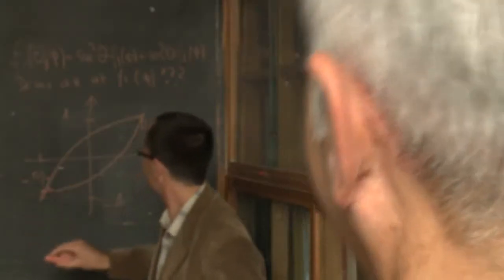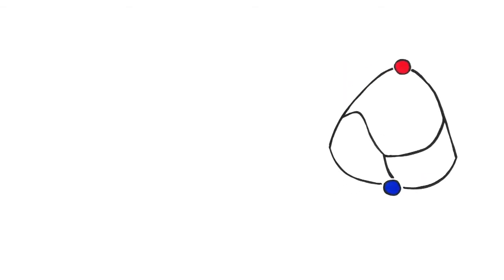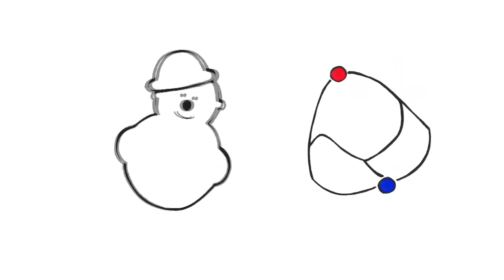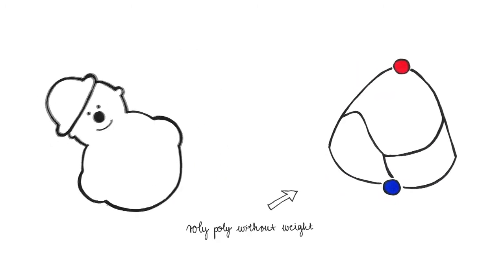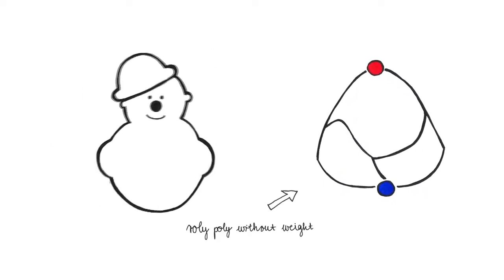It was a fascinating three-dimensional puzzle. Finally we managed to find this shape. The Gumbert behaves exactly like a roly-poly, but it doesn't have an added weight inside. It always returns to the stable point.